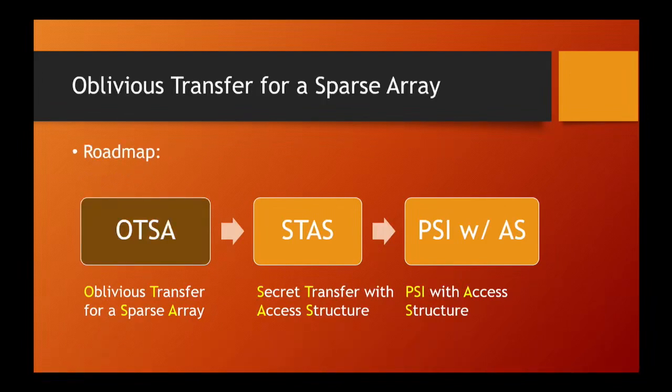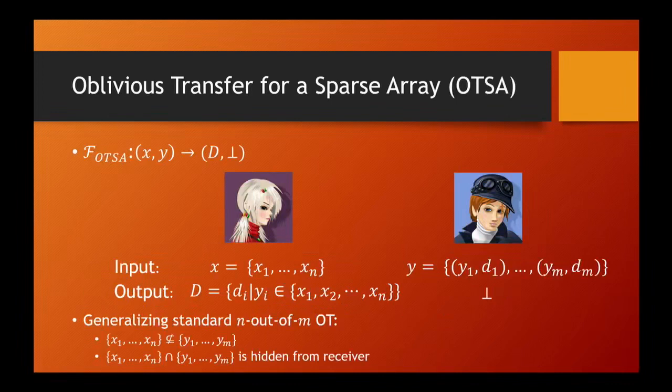Let's start with OTSA. Following the two-party computation, OTSA is defined as follows. The receiver holds an index set x1 to xn. The sender holds another index set y1 to ym. Each sender index yi is also associated with a data item di. At the end of the protocol, the receiver gets the set of data items di such that the corresponding sender index also appears in the receiver index set. Our notion generalizes the standard OT notion because the receiver index xi is not necessarily a subset of the sender index set yi. Moreover, we require that the intersection of the two index sets are hidden. Namely, the receiver only receives a set of data items without knowing their corresponding indexes.